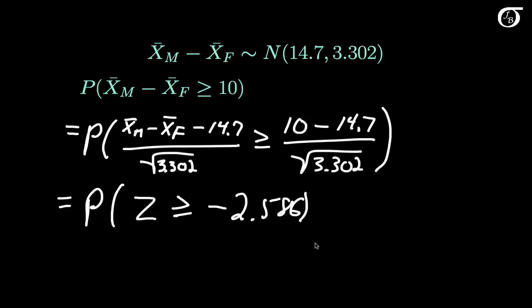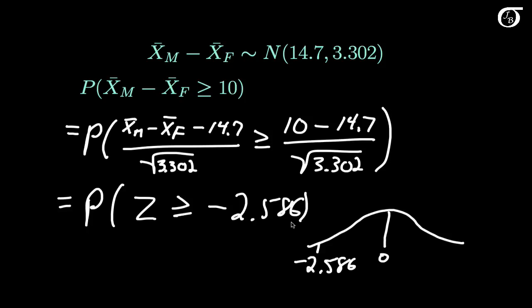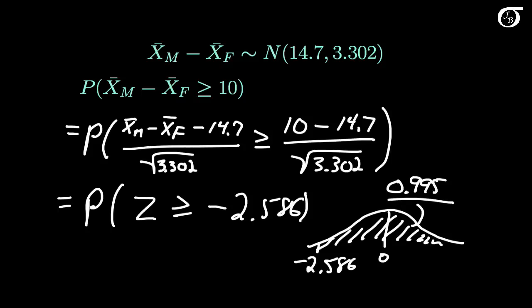We find this probability in the usual way using software or a standard normal table. The value minus 2.586 is in the left tail, and we want the area to the right of that value under the standard normal curve, which is approximately 0.995. So the probability that the sample mean height of the 20 males is at least 10 centimeters greater than the sample mean height of the 15 females is approximately 0.995.